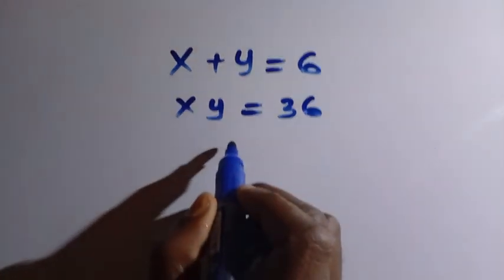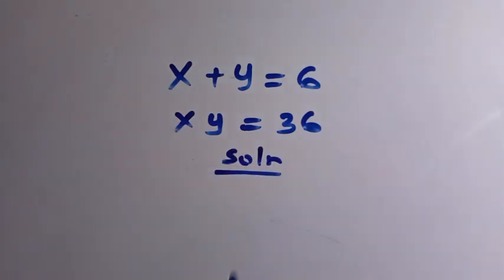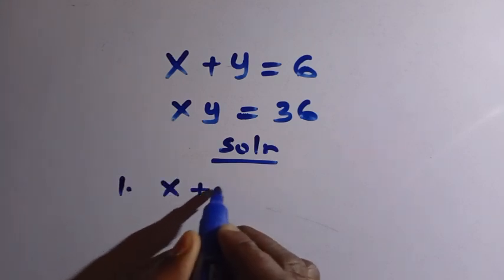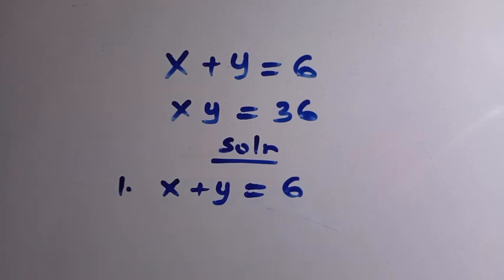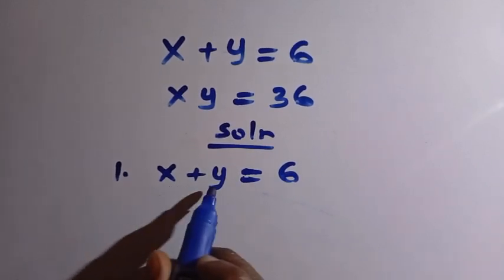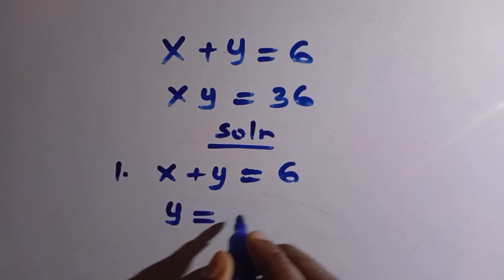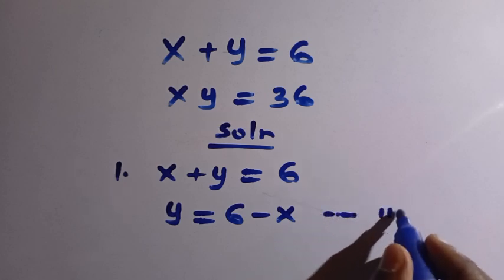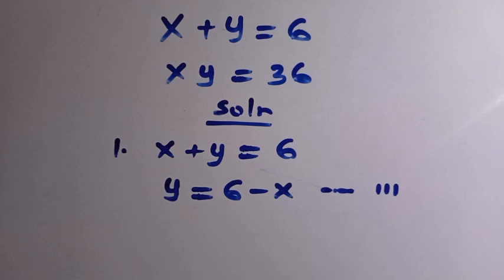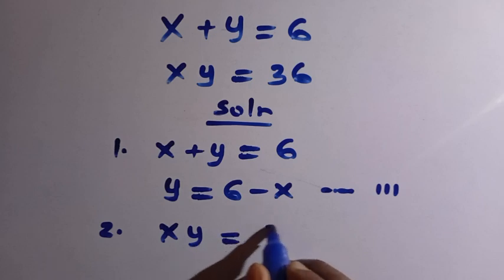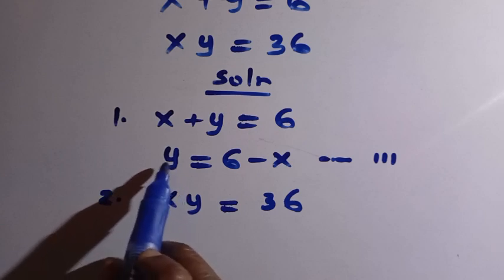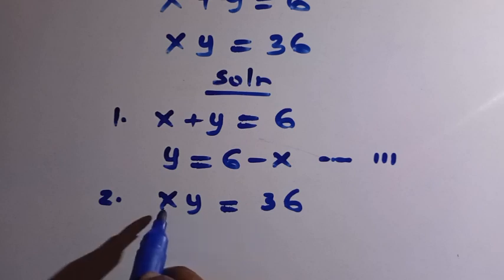To solve this, we consider the following solution. We have two equations here. For equation 1, which is x plus y equals 6, let's make y the subject of the formula. So we have y equals 6 minus x. We consider this as equation 3. Then recalling from equation 2, it says xy equals 36.